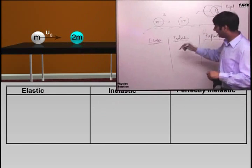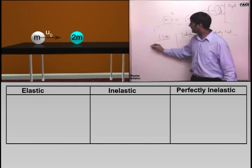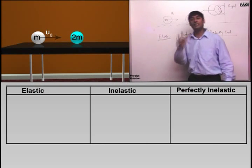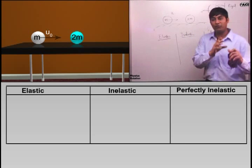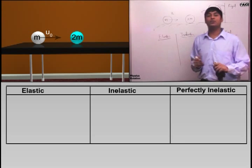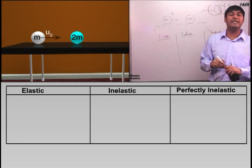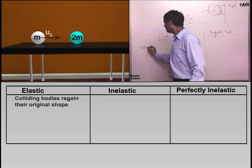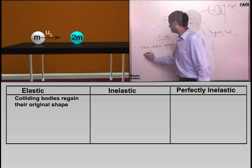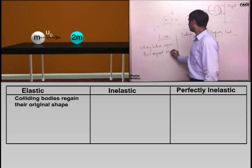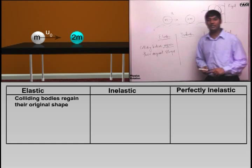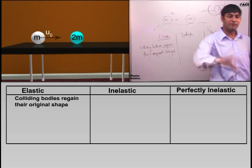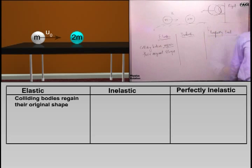Elastic collision means that during collision there will be deformation and there will be conversion of energy, but before collision and after collision, the colliding bodies regain their original shape.